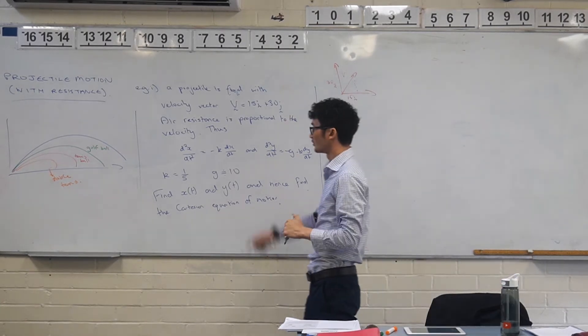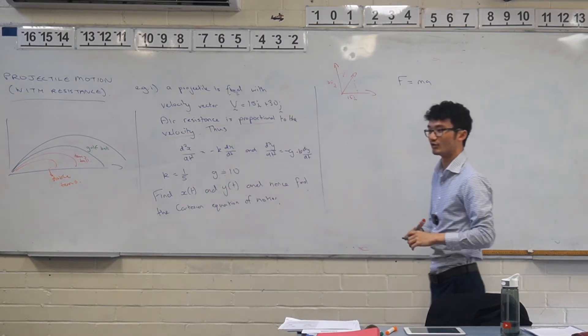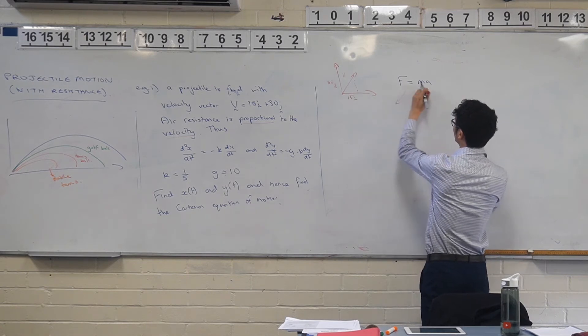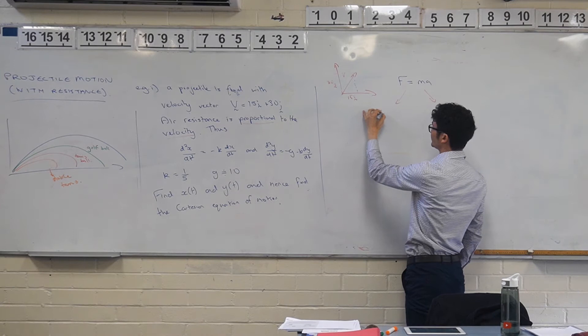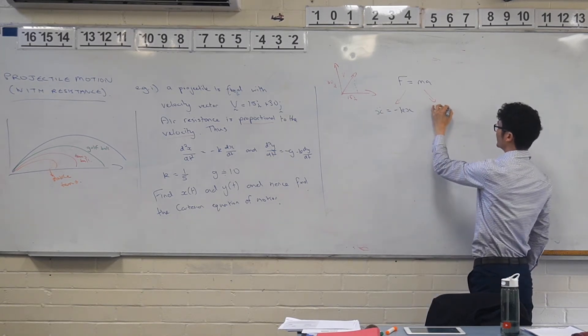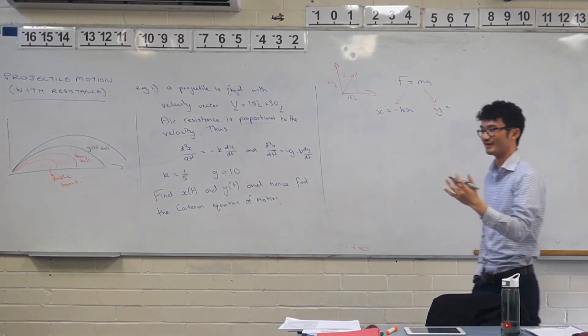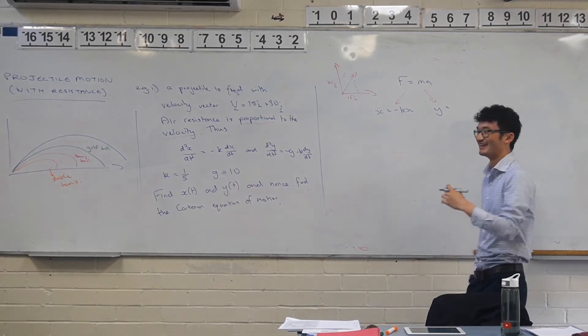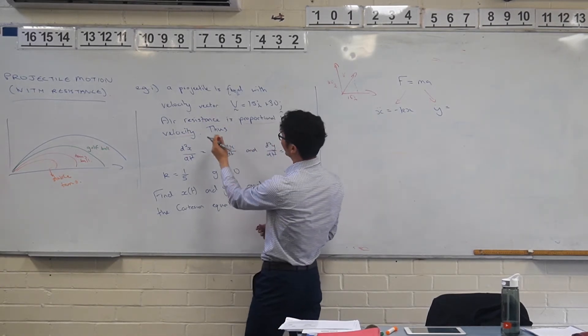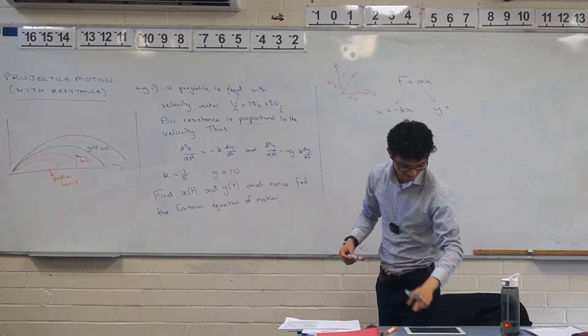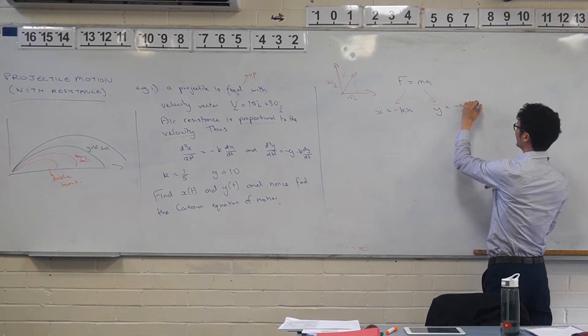You also know that generally when you start these questions, you start with F equals ma, and if we have something that is directly proportional to the velocity, that's kind of like your linear equation. So you know that in terms of horizontal and vertical, our equations for acceleration: x double dot equals to minus kx dot, or y double dot equals to, now what's the difference with our vertical component? What other factors do we have when we look at vertical motion? Gravity.